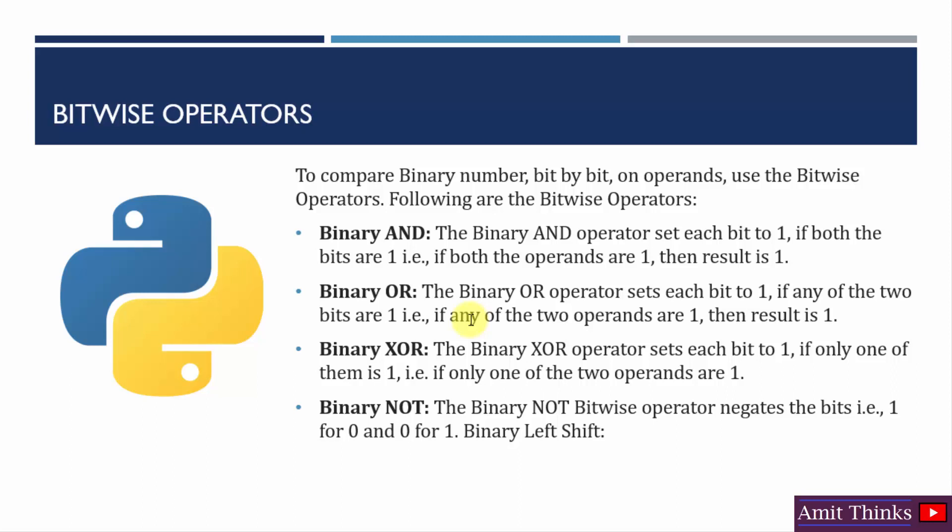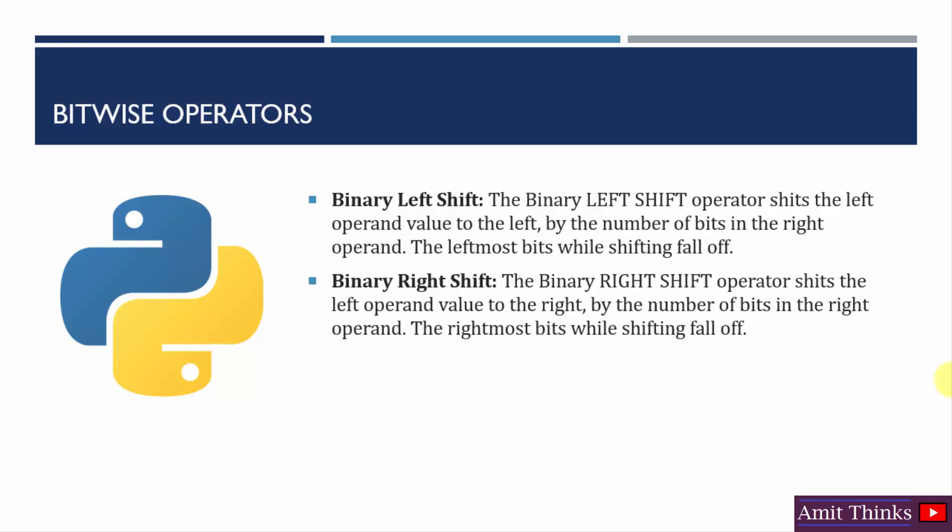Now comes the bitwise operator. To compare binary numbers, we use bitwise operators — each and every bit is checked. We have four types: binary AND, OR, XOR, and NOT. For AND: if both bits are 1, the result is 1. For OR: if any bit is 1, the result is 1. For XOR: sets each bit to 1 only if one of the two operands is 1. For NOT: negates — zero becomes one and one becomes zero. We also have binary left shift and right shift operators. We will see all this using examples.